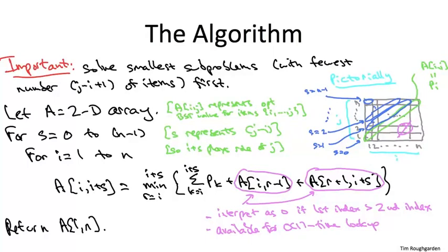So that's it. That's a dynamic programming algorithm that computes the value of an optimal binary search tree given a set of items with probabilities.